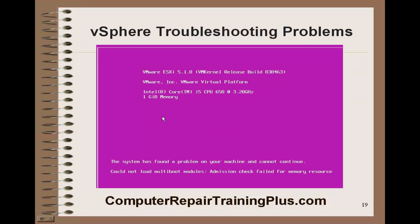You might also see a purple screen of death — instead of a blue screen of death, VMware uses purple screens. Here I was trying to configure an ESXi host and I didn't set enough memory. One gigabyte of memory is not enough. You need four gigabytes for ESXi 5.5, and you can get away with a little more than two — about 2.2 gigs — for ESXi 5.1, but one gigabyte is not enough. You will get a purple screen of death or other errors trying to install.